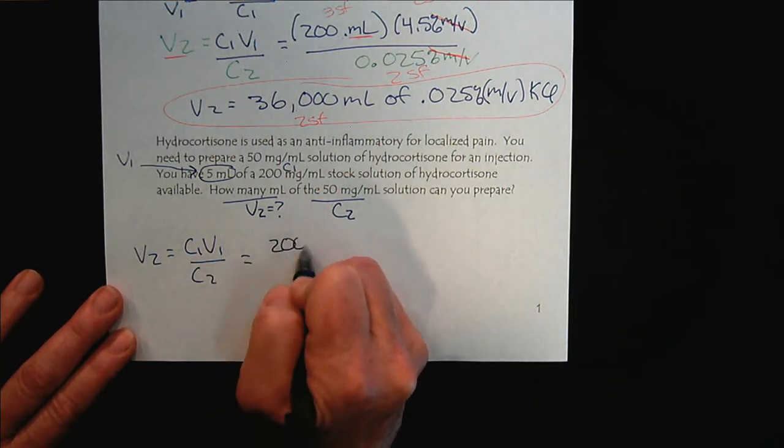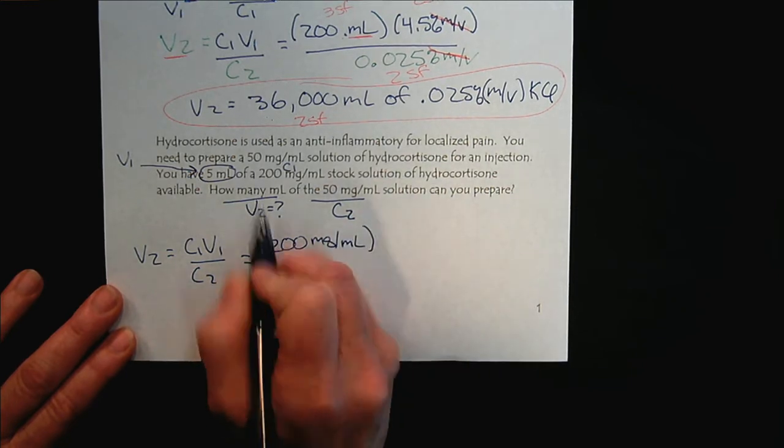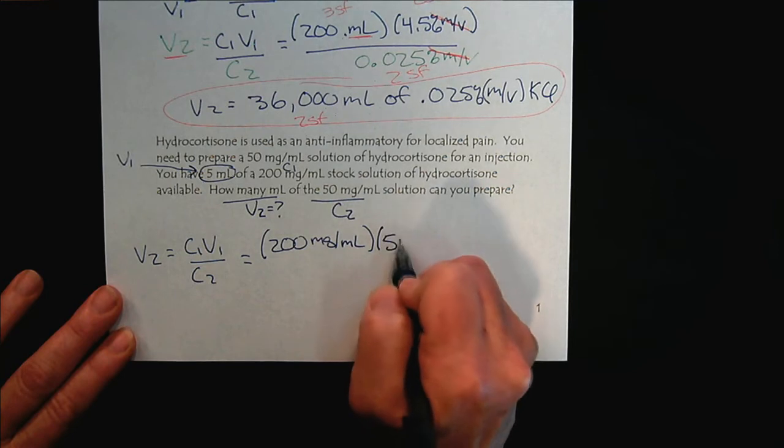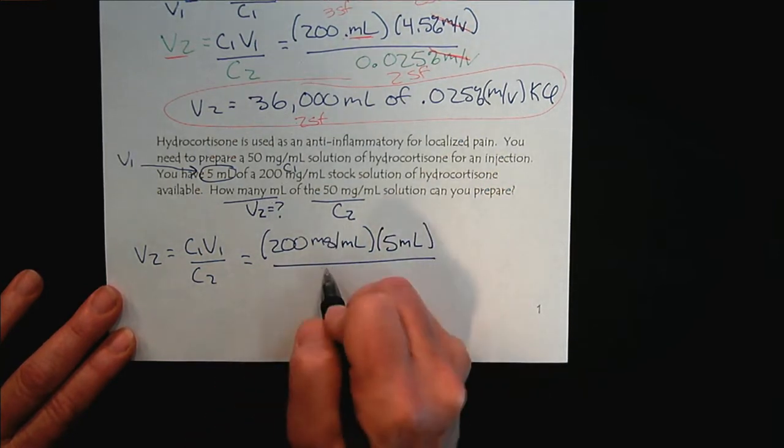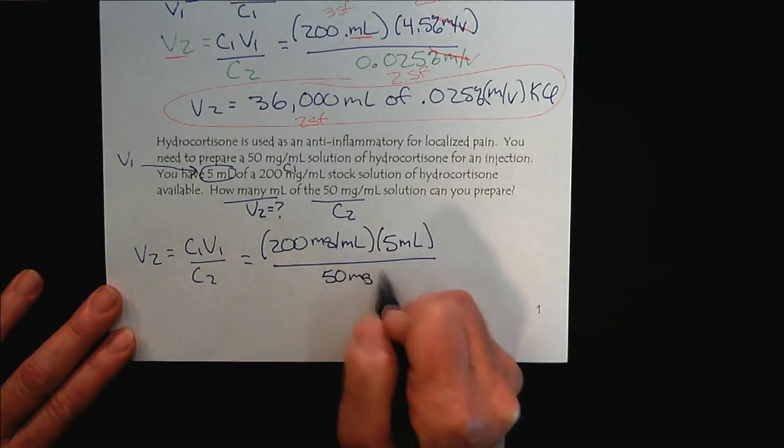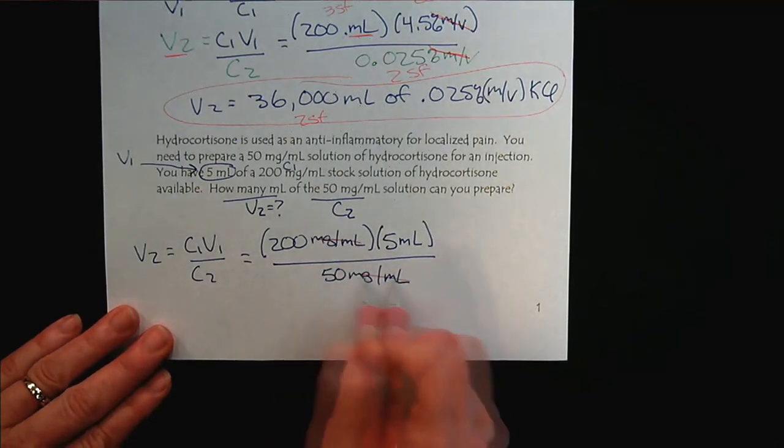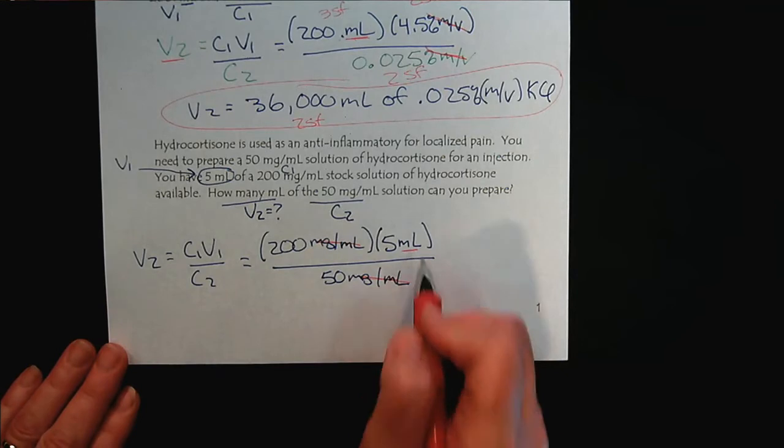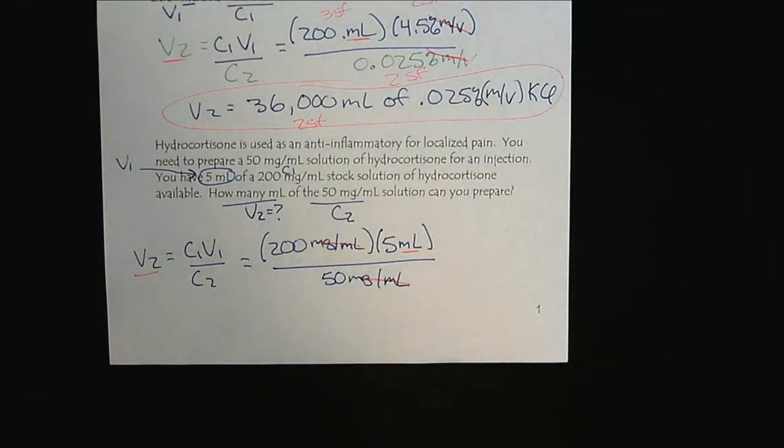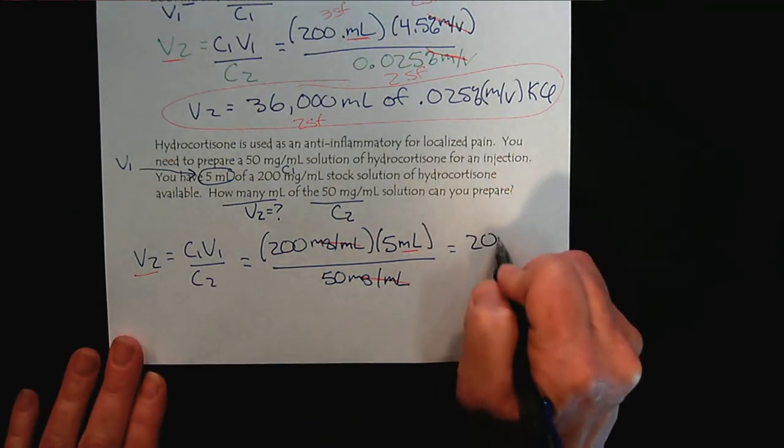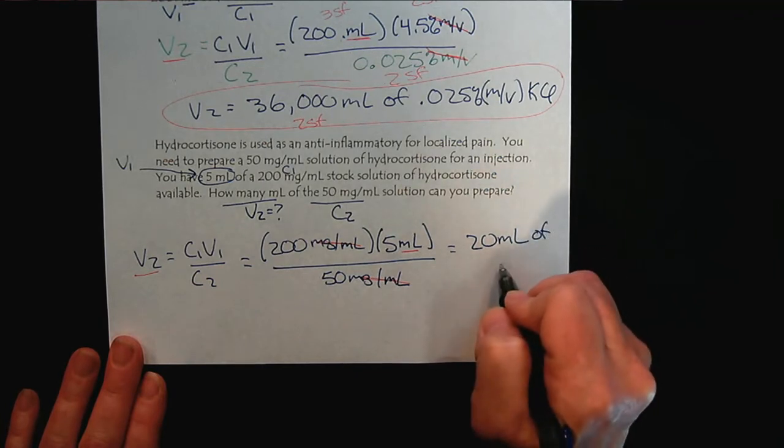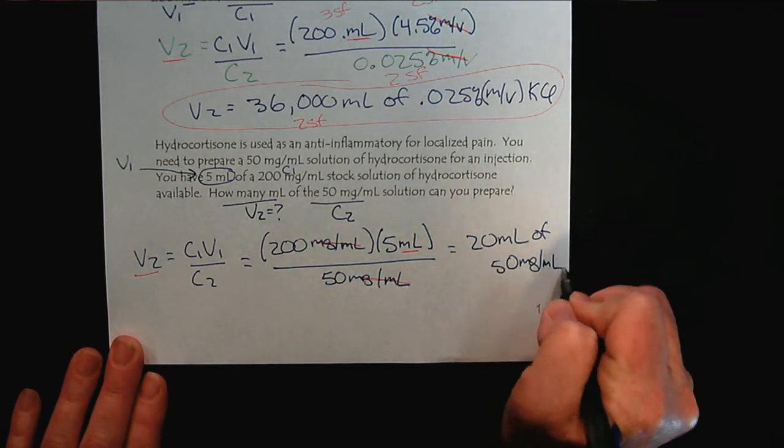200 milligrams per milliliter. There's our C1 and our volume, 5 milliliters. The desired concentration is 50. Notice we've used very different concentration units from the last one. But this calculation works regardless, because the milligrams per mil all cancel. Once again, we're left with milliliters. We plug it into our calculator and we see that we have the ability to produce 20 milliliters of the solution.